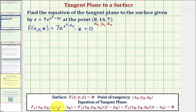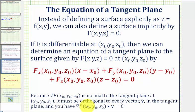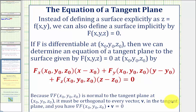The equation of the tangent plane comes from the dot product of the gradient of F and vector V, where vector V is a vector in our tangent plane. Since the gradient of F evaluated at the point of tangency is normal to the tangent plane, it must be orthogonal to every vector V in the tangent plane, making this dot product equal to zero. The components of vector V would be (x - x₀), (y - y₀), and (z - z₀).